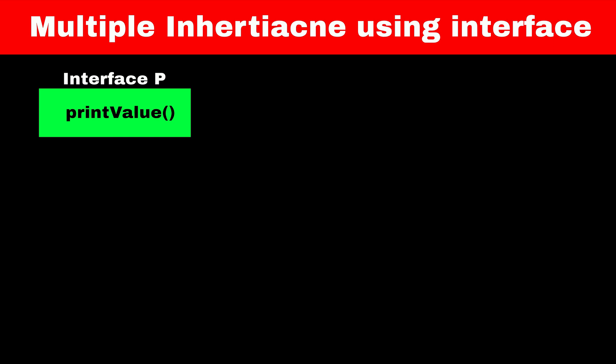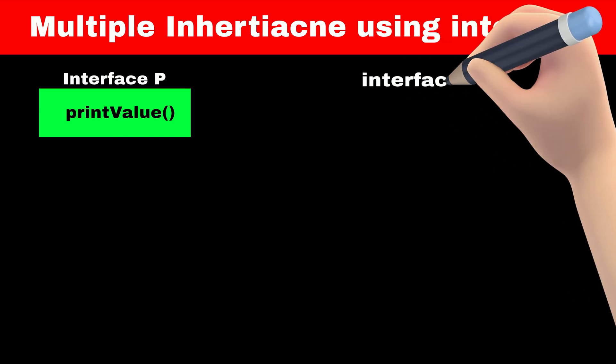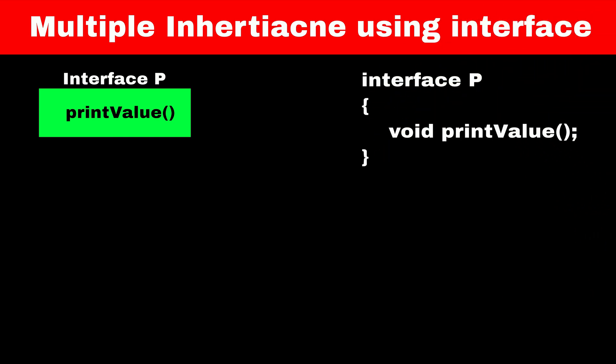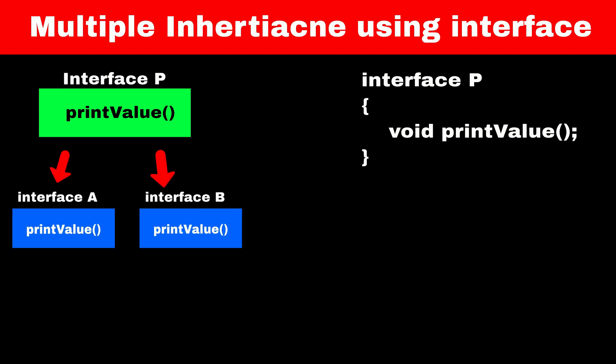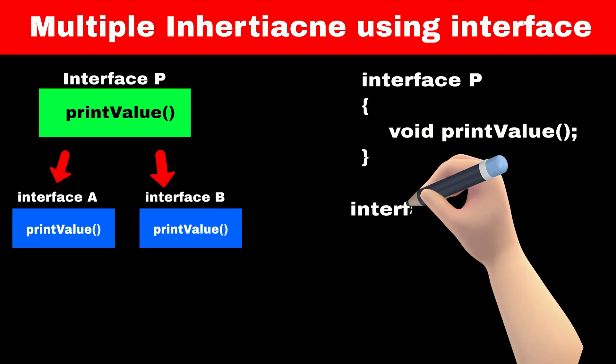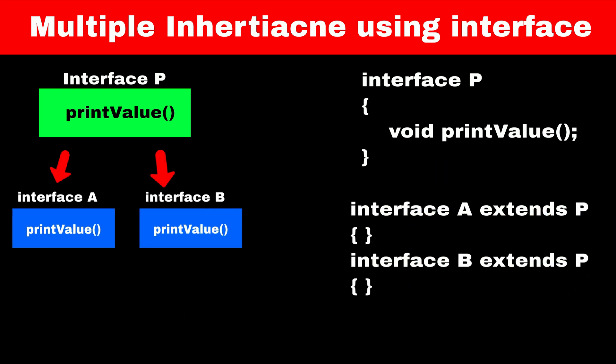So let's replace our classes with interfaces. Now consider that print value is an abstract method — meaning we have not defined this method in parent interface B. This method will get extended to child interfaces A and B. Both of these interfaces will receive a copy of this method. Since interfaces can have abstract methods, Java won't throw any error even if we don't define this method.